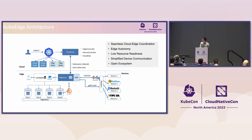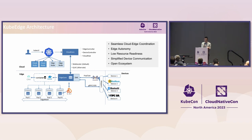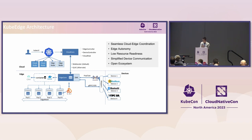Our architecture is on our website. Basically, we do seamless cloud-edge coordination. A key difference from regular cloud is that we achieve edge autonomy. For edge nodes, we target low resource consumption. An important aspect for IoT cases is that we simplify device communication. We always follow the open ecosystem and welcome every company to contribute.